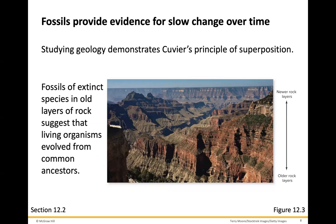Fossils ultimately provide evidence for slow change over time. Studying the geology demonstrates Cuvier's principles of superposition. Fossils of extinct species in old layers of rock can suggest that living organisms have evolved from common ancestors. You're sort of examining newer rock layers to older rock layers — the deeper you get, you can see what was present prior and how they may have looked, and how they differ from current members of the same species.